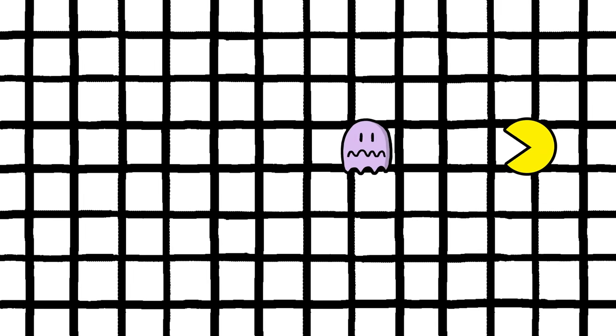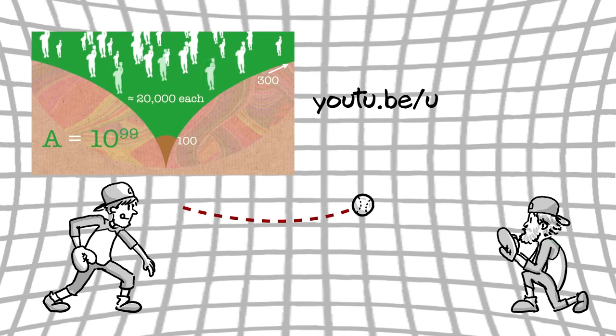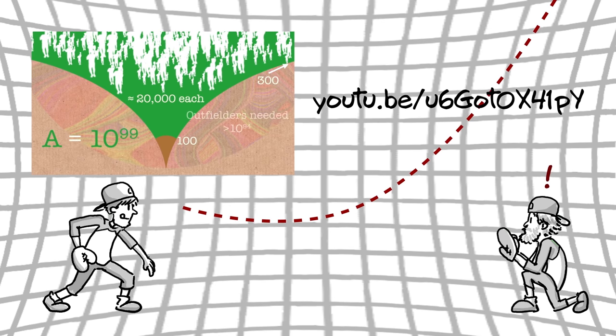If space is flat everywhere, its shape could be simple, just extending out straight to infinity. Or it could loop around in a periodic way, like in some video games. And if space is negatively curved everywhere, sports would be impossible.